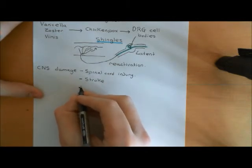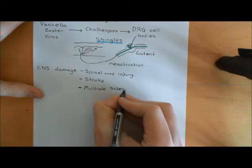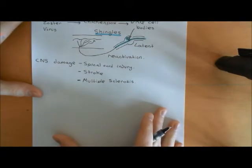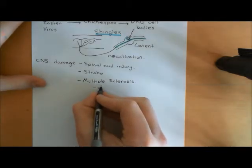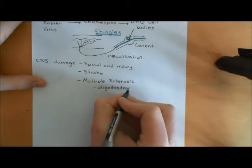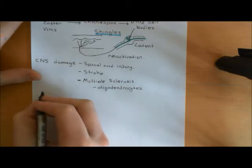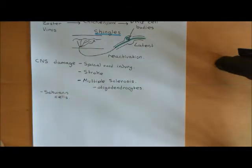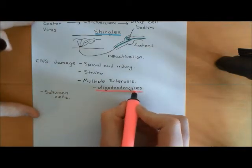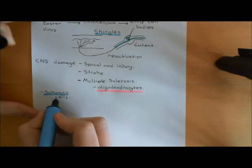Another cause of neuropathic pain from CNS neuron damage is multiple sclerosis. Multiple sclerosis is an autoimmune disease in which the immune system attacks oligodendrocytes — the myelinating cells of the central nervous system. They are the equivalent of Schwann cells in the PNS, but they're in the CNS producing myelin around central nervous system axons. In multiple sclerosis, the immune system attacks the oligodendrocytes, causing demyelination of a huge number of CNS neurons.